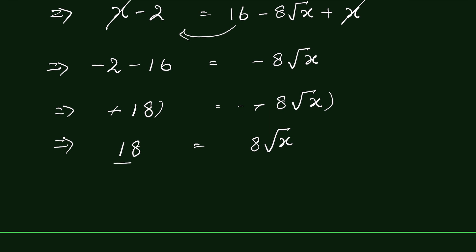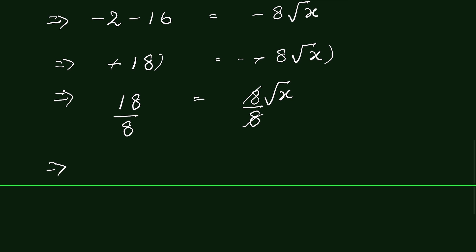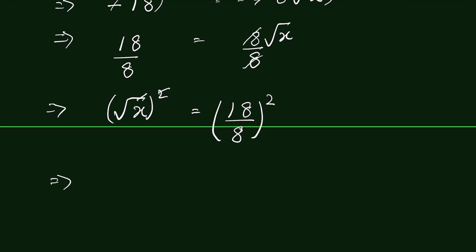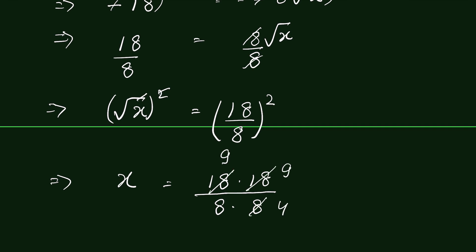Dividing both sides by 8, the 8s cancel and we get square root of x equals 18 upon 8. To remove the square root, we square both sides again: x equals 18² upon 8². That is 18 times 18 upon 8 times 8. Dividing numerator and denominator by 2 twice gives 81 upon 16. So x equals 81/16.